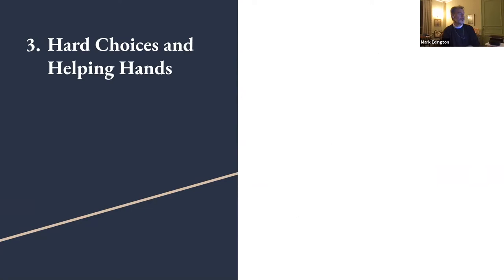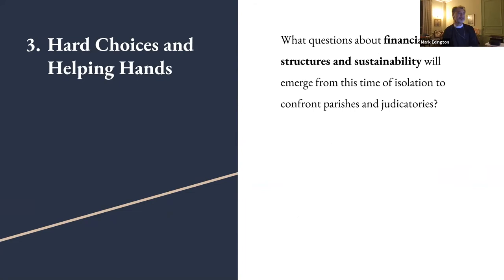Third question, hard choices and helping hands. What's that mean? Well, what questions about financial structures and stability will emerge from this time of isolation to confront parishes and judicatories? Judicatories are, you know, dioceses or larger structures. And is self-help the only option? What do I mean by that? Well, self-help is pretty much the ethos of the Episcopal Church, or at least of our country. It basically says that you're on your own. It basically says that, you know, your church sort of stands or falls on the basis of the contributions that you are able to receive from your people and on the endowment given by generations past, but it's up to you. It's up to each individual congregation.